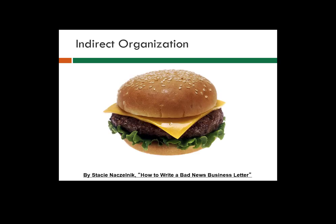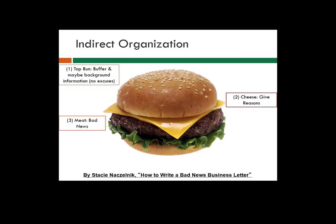Here's another way to remember this. Think of the bad news as the meat of the message in indirect organization. You might have a buffer — a bun. You might have your reasons and your bad news. But ultimately, even if you're buffering it, you're still eating a burger — you're just making it easier to eat and a whole lot less messy. So this is a great way to remember indirect. Bad news is still there, bad news is still the meat of the message, but we're going to make it easier for people to understand and then make their next steps forward.